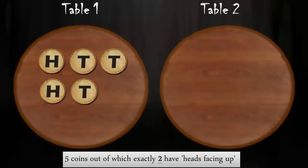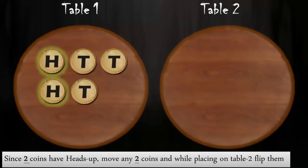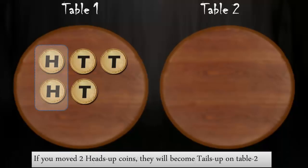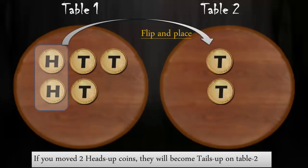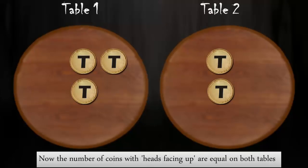Let's quickly consider an example of five coins out of which exactly two have heads up. Since two coins have heads up, you should move any two coins and while placing on table 2 simply flip them. If you move two coins with heads facing up, they will become tails facing up on table 2. Now, the number of coins with heads facing up is equal on both tables and that's zero.